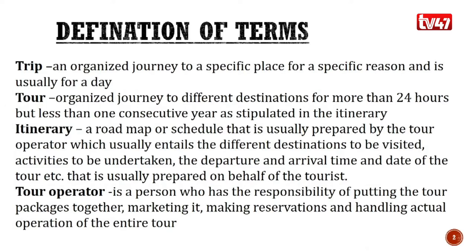Next we'll be defining what a tour is. It is an organized journey to different or many destinations for a period of more than 24 hours but less than 12 consecutive months. The difference between a trip and a tour is that a trip takes less than 24 hours and can also be referred to as an excursion or a short journey. But for a tour, you visit several destinations within a period of more than 24 hours but less than one consecutive year.